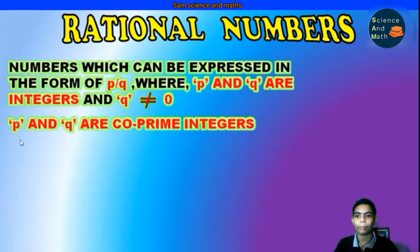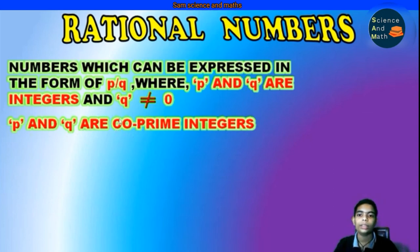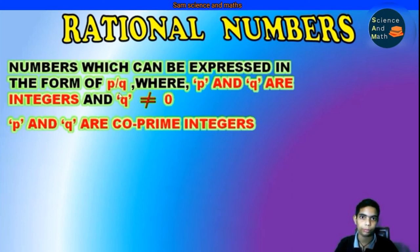The second point: P and Q are co-prime integers. Co-prime integers are integers that have no common factors other than 1, which means P/Q is in its simplest form.